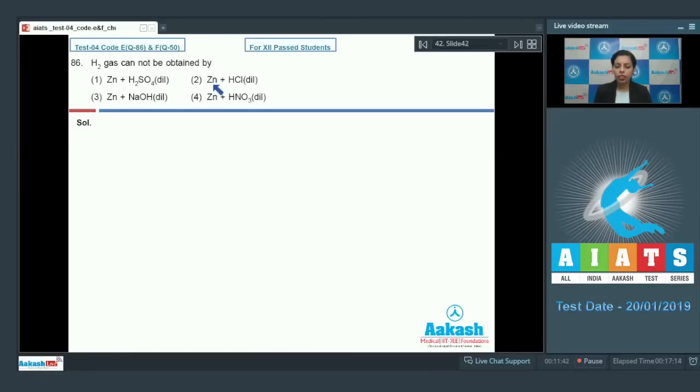Further, zinc is reacting with dilute HCl. Hydrogen gas will also be evolved in this case. Zinc reacting with sodium hydroxide, dilute alkali. Zinc is showing amphoteric nature here and it releases hydrogen gas.